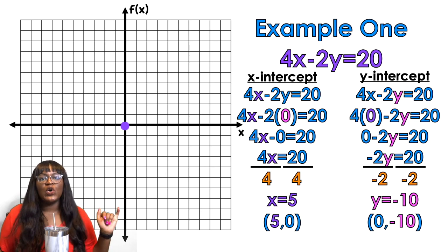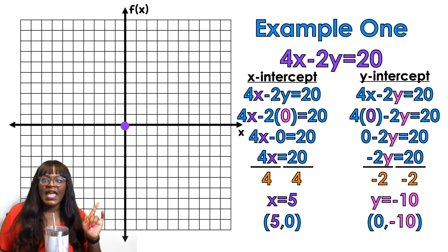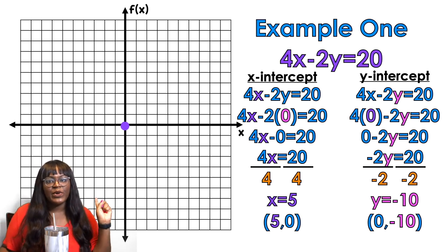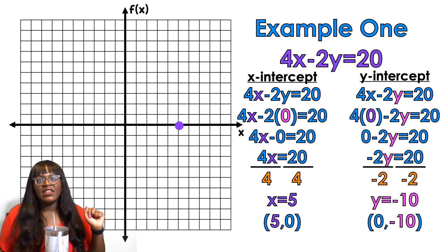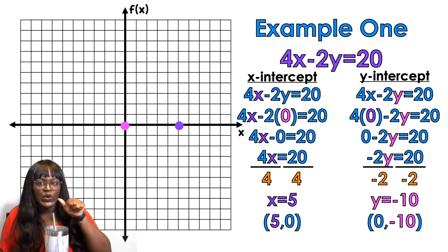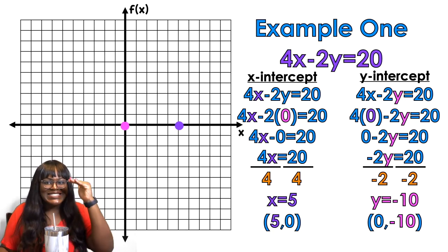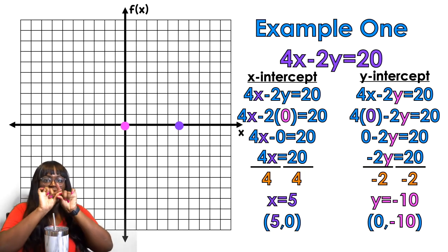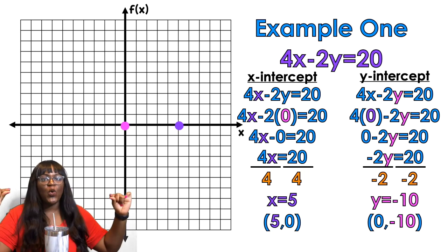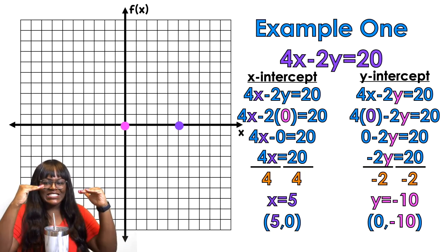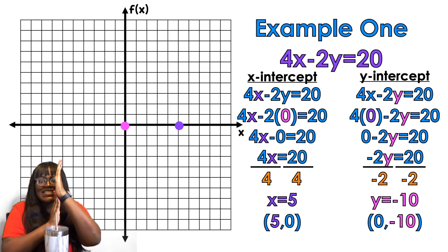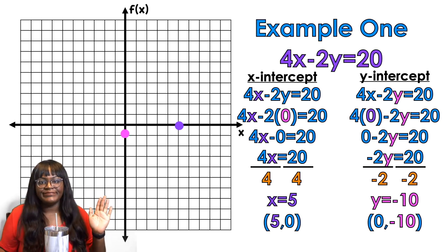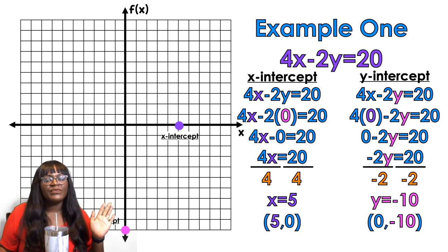Now I'm going to plot my x-intercept — start at the origin and go over five spaces. Then plot my y-intercept — start at the origin and go down 10 spaces. Remember: x-intercepts go on the x-axis, y-intercepts go on the y-axis. Once I have both points, I can graph the line.